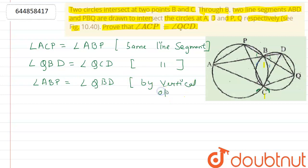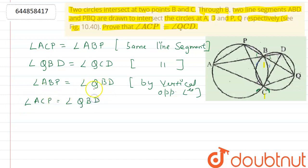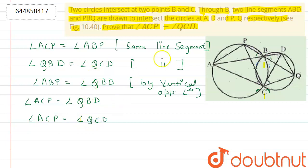So now, angle ACP equals angle ABP, and angle ABP equals angle QBD, therefore angle ACP equals angle QBD. Since angle QBD equals angle QCD, we conclude that angle ACP equals angle QCD — which is what we had to prove. Hence proved.